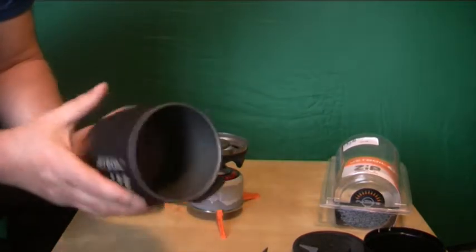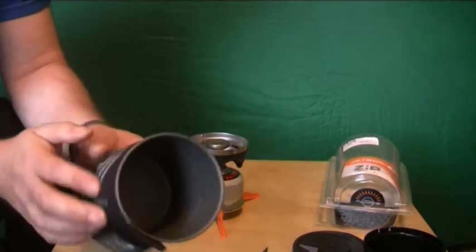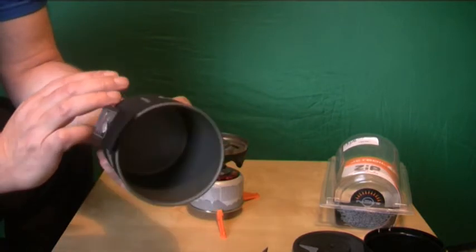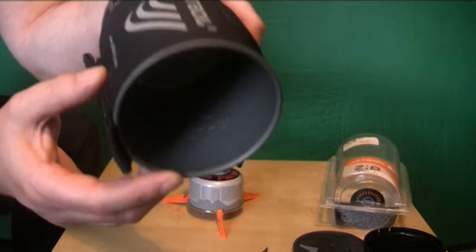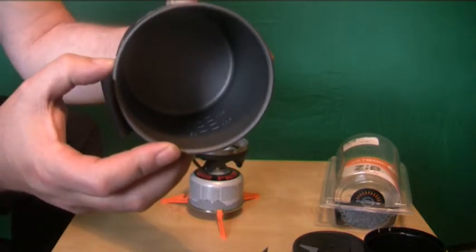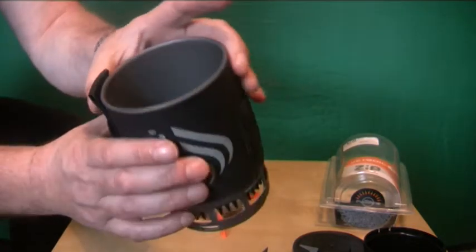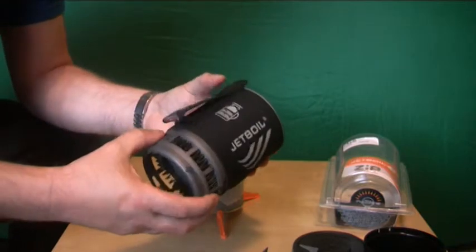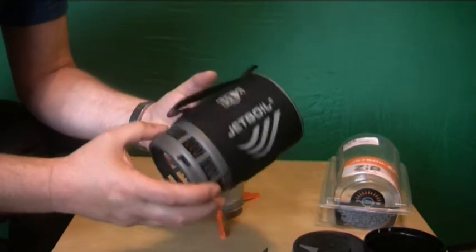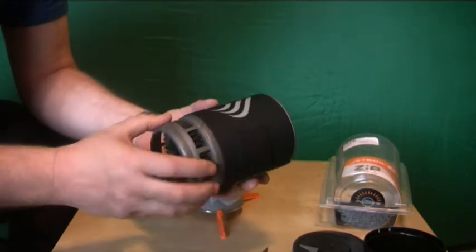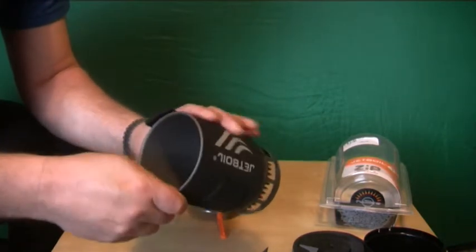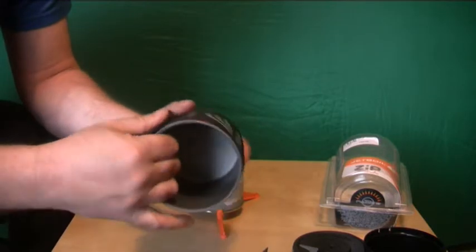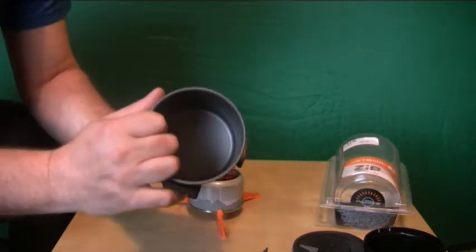The Jetboil cup has markings on the inside in milliliters. You can see them on the camera there. It's anodized aluminum. You can get titanium, which saves a few grams in weight but costs quite a few more pounds. That's up to you whether it's worth it. This feels really non-stick, but I'm going to try that in a minute.